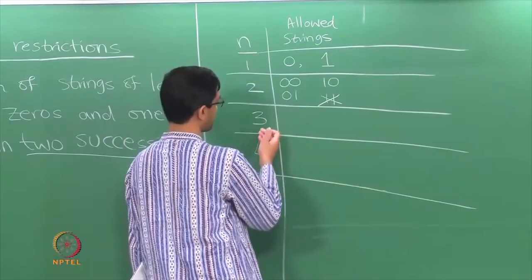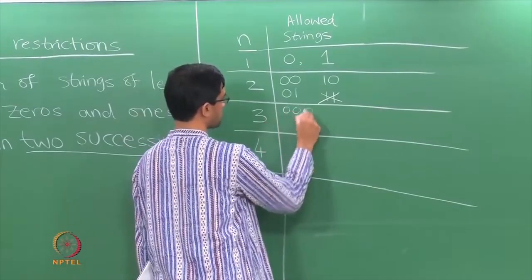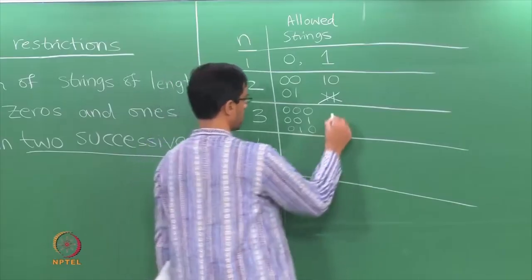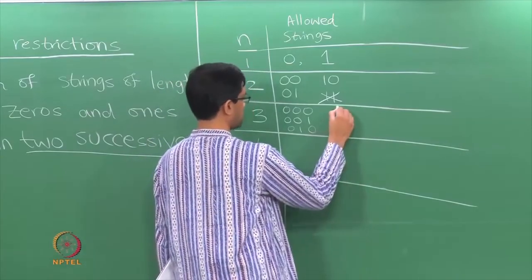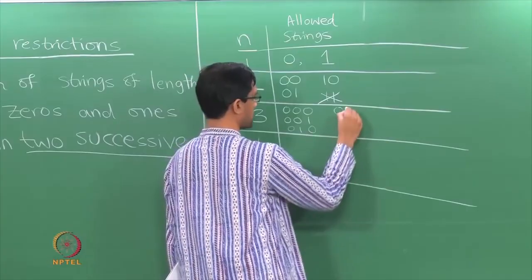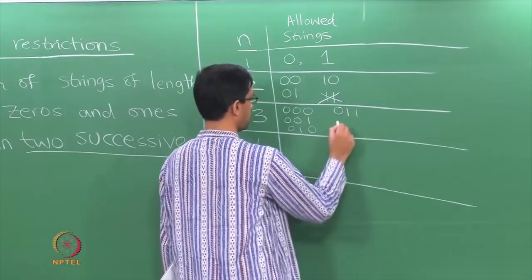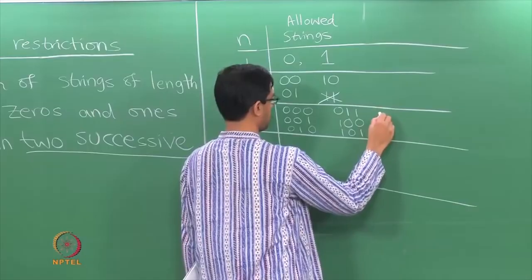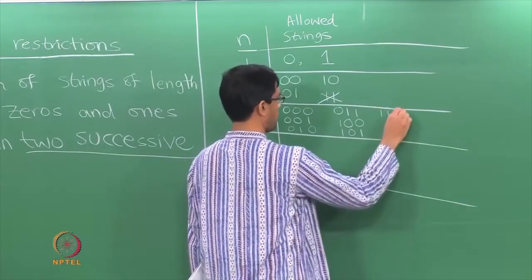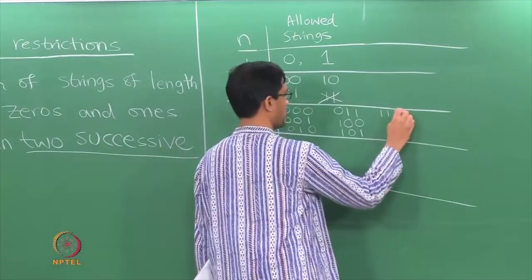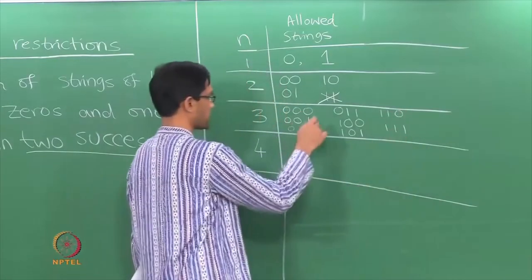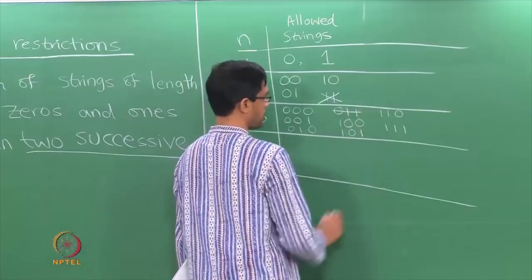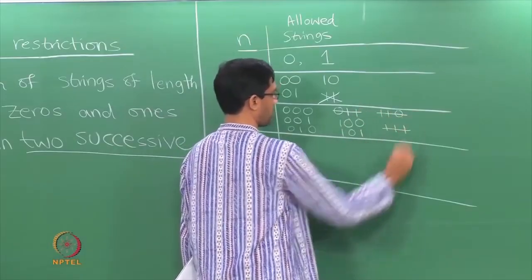For a string of length 3 you can have 000, 001, 010. Let me write all of them down and get rid of the ones that do not satisfy the constraint: 011, 100, 101, then 111. Also 110 and 111. So we get 6 plus 2 equals 8 total, out of which we disallow 011, 110, and 111, as they contain 2 successive 1s.